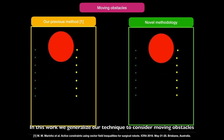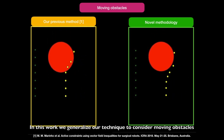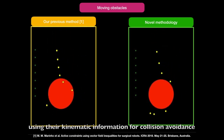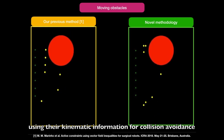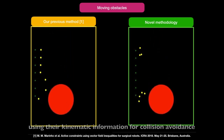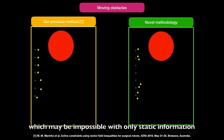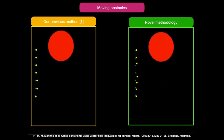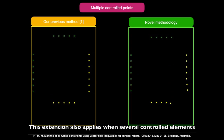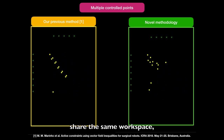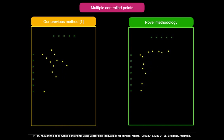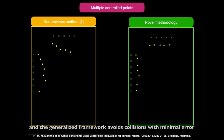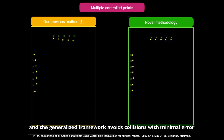In this work, we generalize our technique to consider moving obstacles using their kinematic information for collision avoidance, which may be impossible with only static information. This extension also applies when several control elements share the same workspace, and the generalized framework avoids collisions with minimal error.